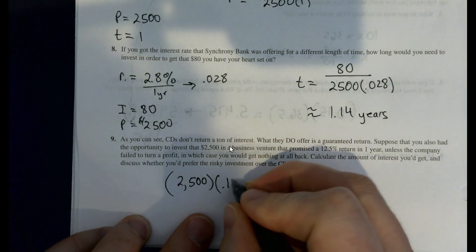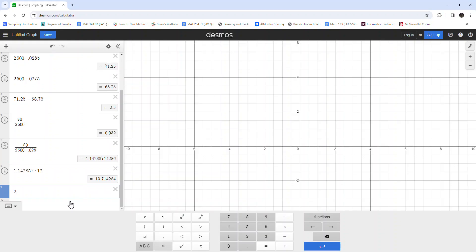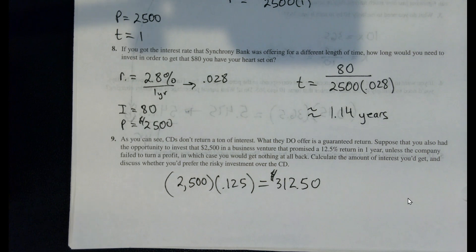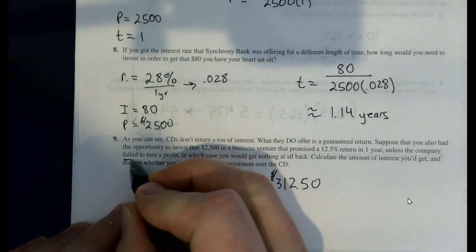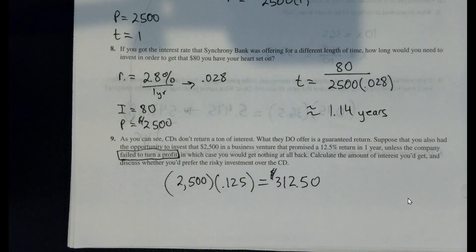What's the amount of interest you'd get? And then let's decide if is it worth that risk? Well, if it's simple interest, this is the amount of money we could potentially get. It's obviously going to be way more. $312.50. And what we would need to know is how likely are we to get that return? And how likely is there to be no profit? And then we lose all $2,500. That's a pretty risky sort of business venture. I don't know if I would be interested in taking that. I would definitely need a lot more information.